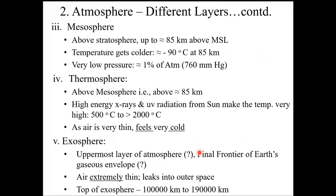Then we come to the mesosphere. It is above the stratosphere, up to about 85 kilometres above sea level. The temperature gets to minus 90 degrees centigrade at around 85 kilometres. The pressure is very, very low — approximately one percent of the atmospheric pressure. The standard atmospheric pressure is 760 millimetres of mercury at mean sea level, so that means the pressure is around 7.6 millimetres.